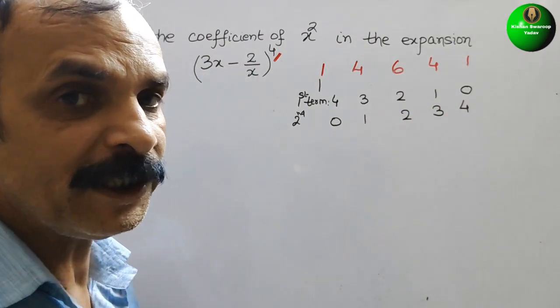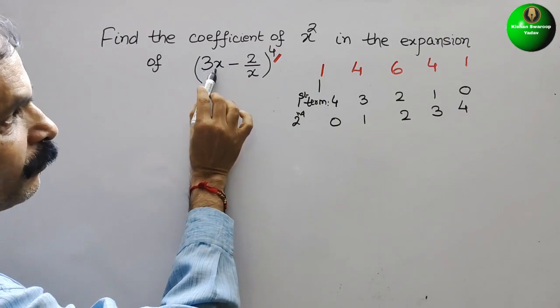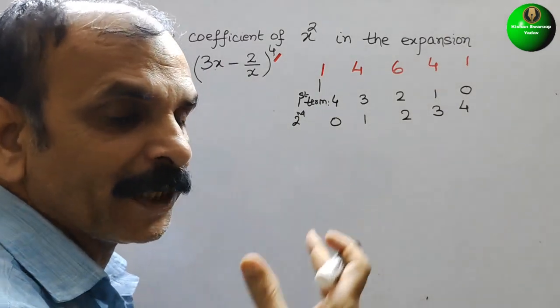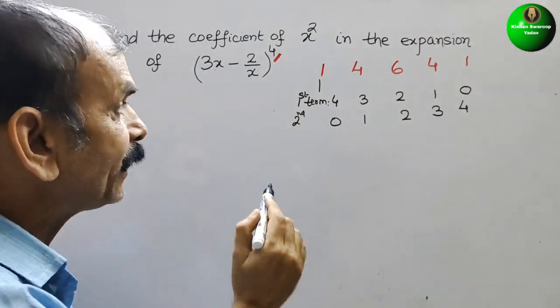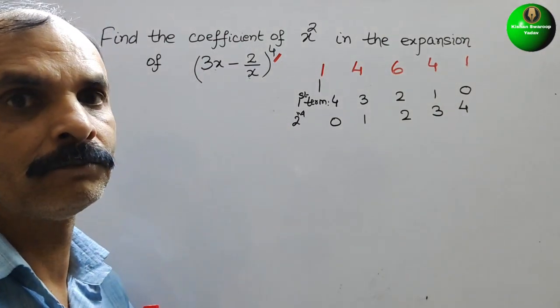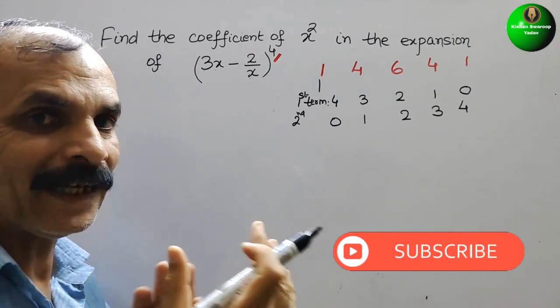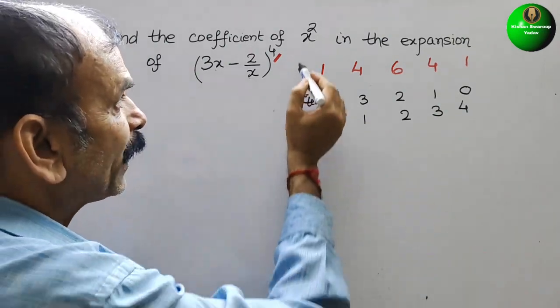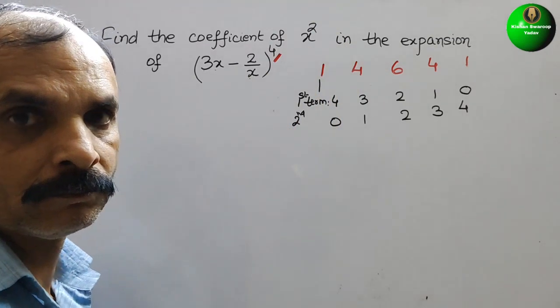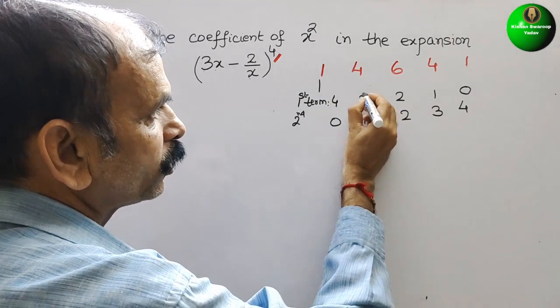If you see this, first term x is at the numerator and in the second term, the x is at the denominator. So if you multiply them, we should get x². How it will be? You can see this combination works out.